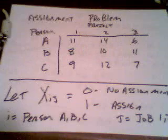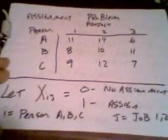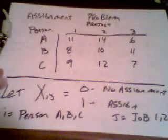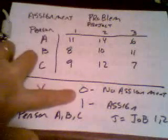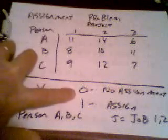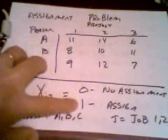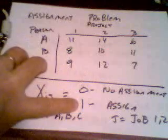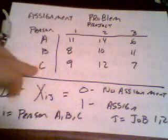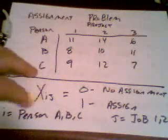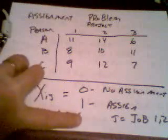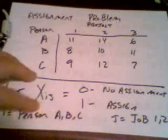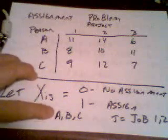We want to solve this with LP. Let's define our variables. X_ij is equal to zero if there's no assignment, and equal to one if you make the assignment. Where i is the person — A, B, C — and j is the job — one, two, three. So we're using subscripted variables again.